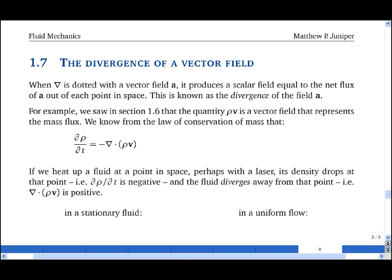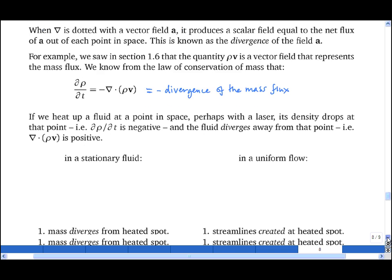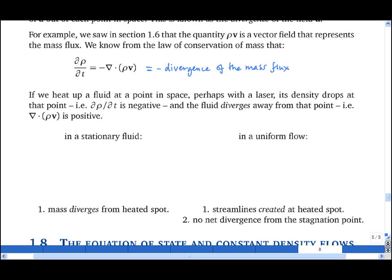We saw in section 1.6 that the rate of change of density at a point in space is equal to the negative of the divergence of the mass flux. The nice thing about fluid mechanics is that you can give this a very visual meaning.